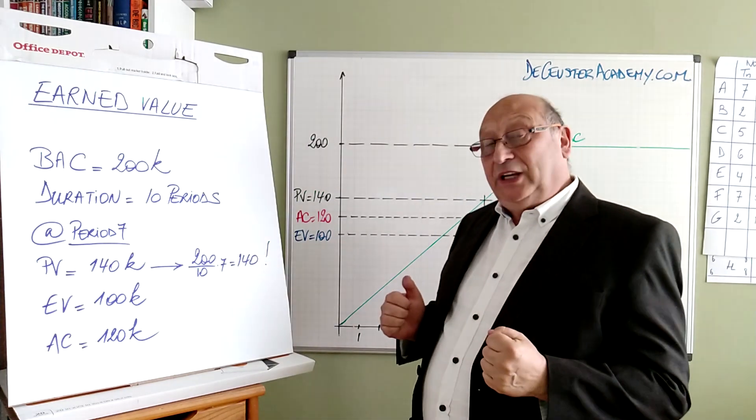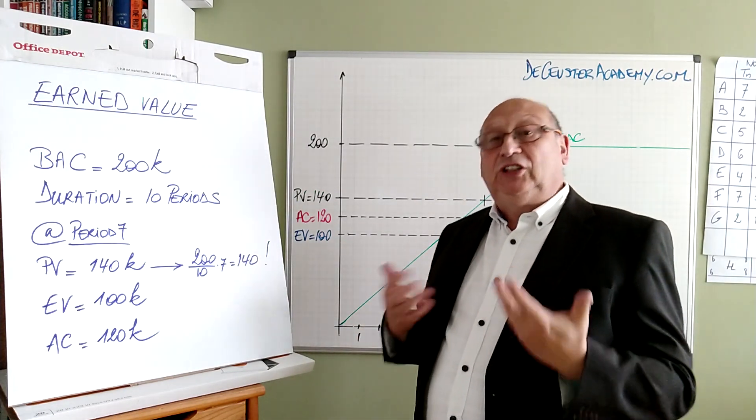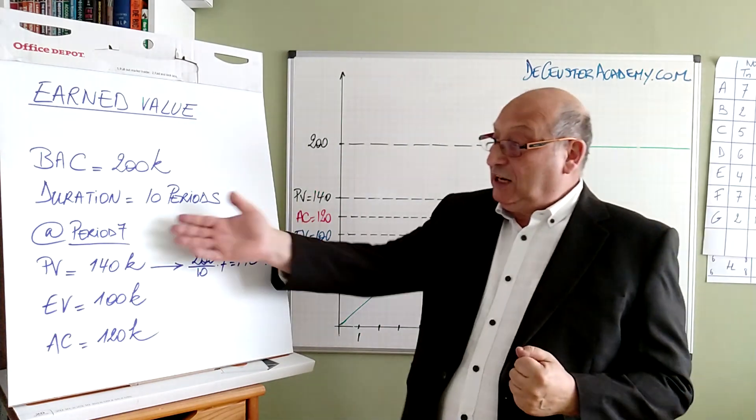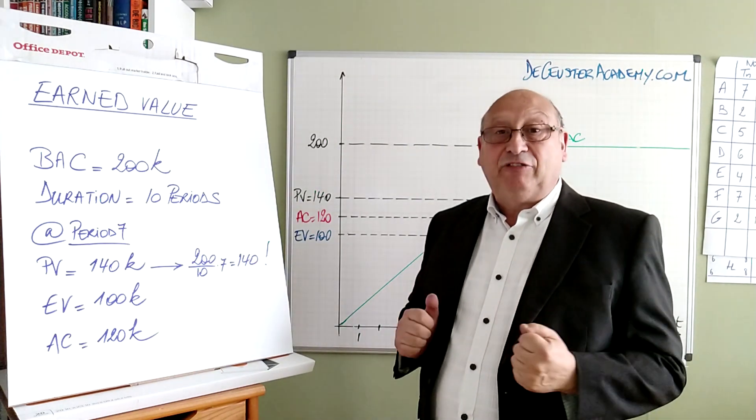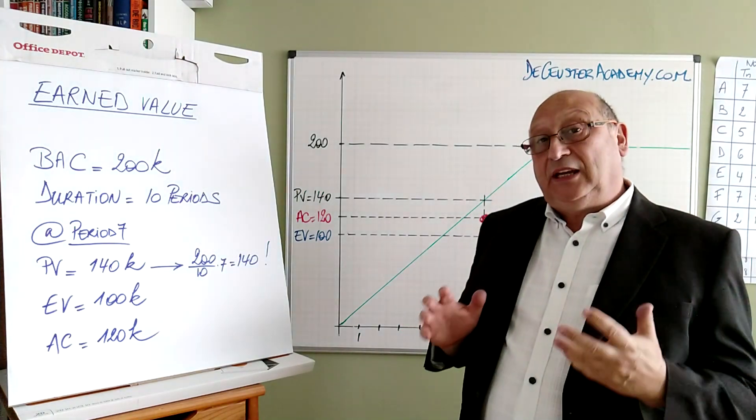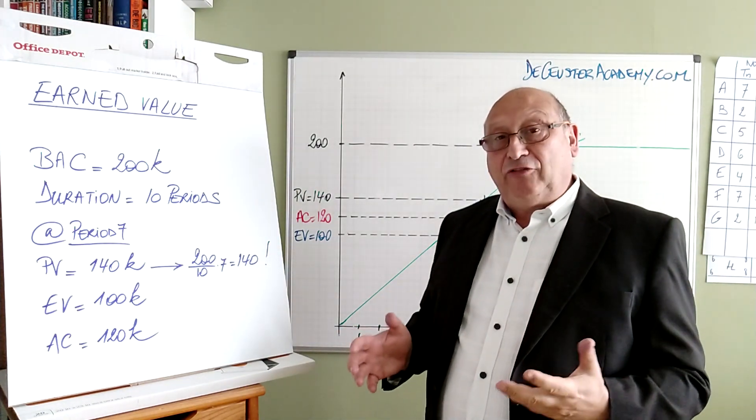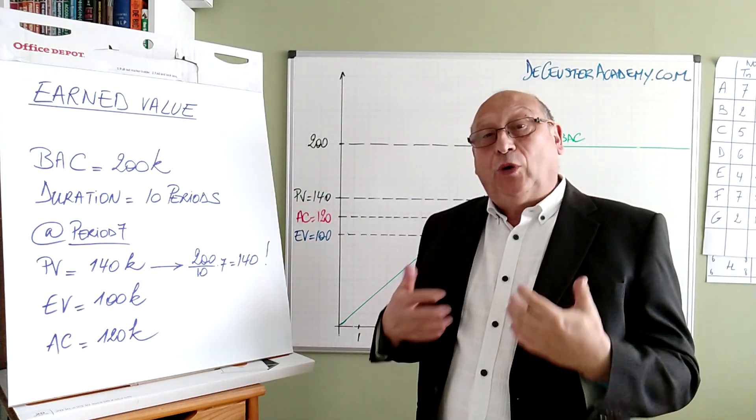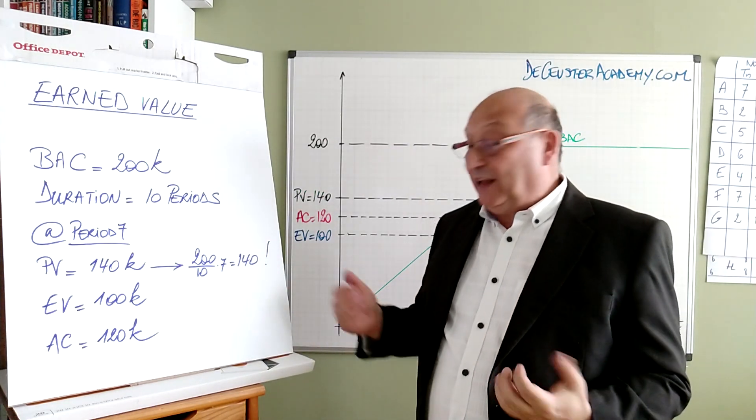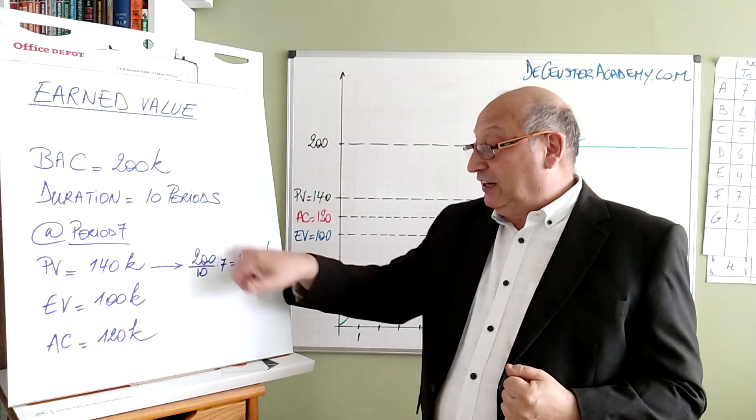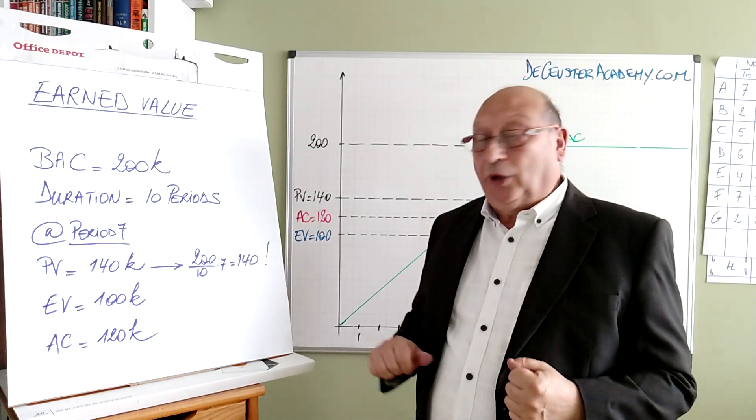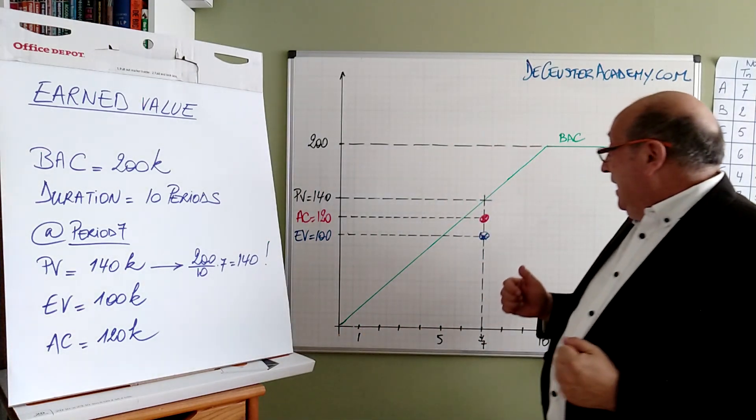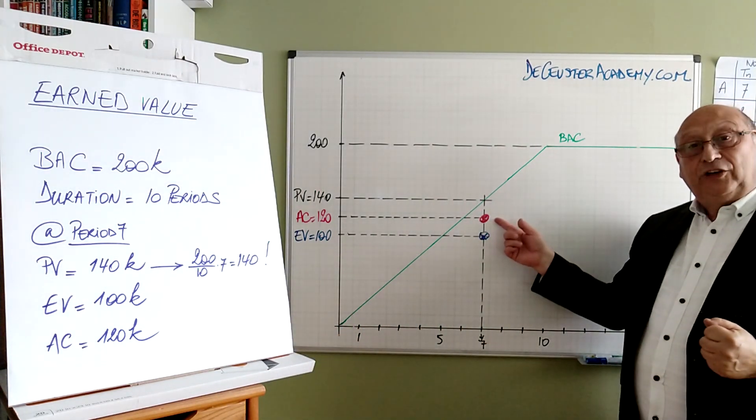Based on this we look at the situation at a certain moment. Here we look at period 7. At period 7 we expected to have a planned value of 140k. That's what we expected to spend. We can calculate that linearly, rule of 3: 200 divided by 10 times 7 is 140. And I see that point here on the graph.